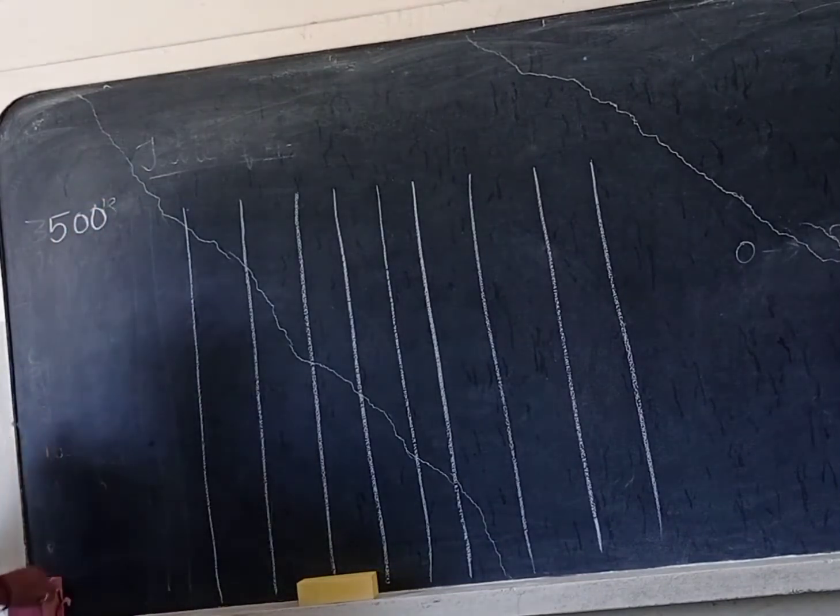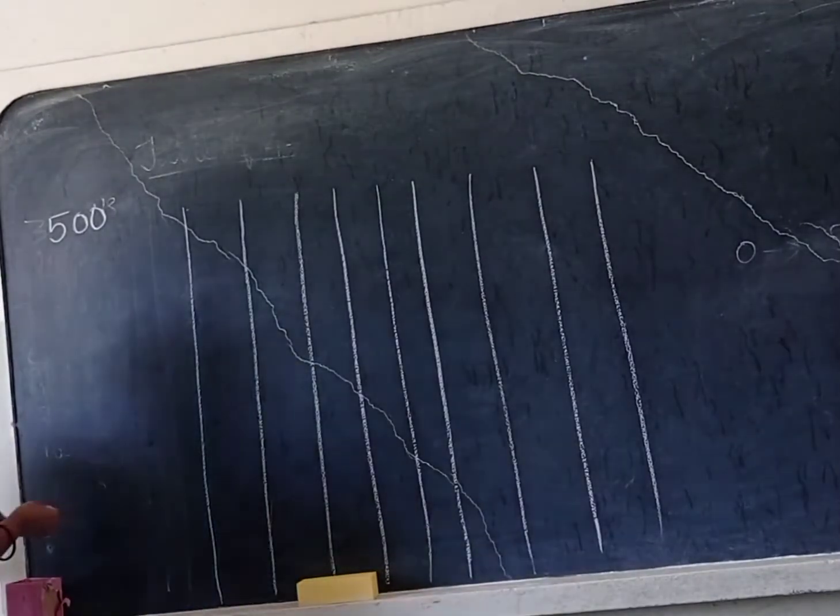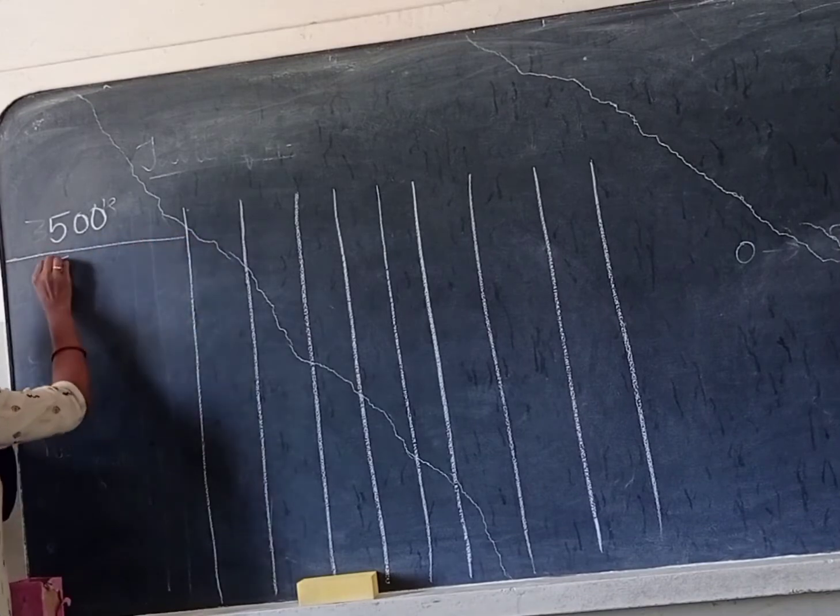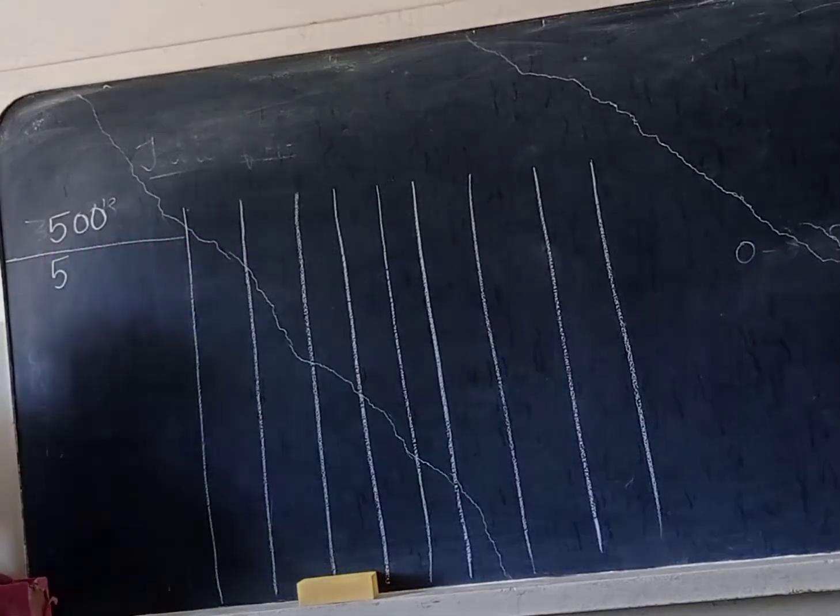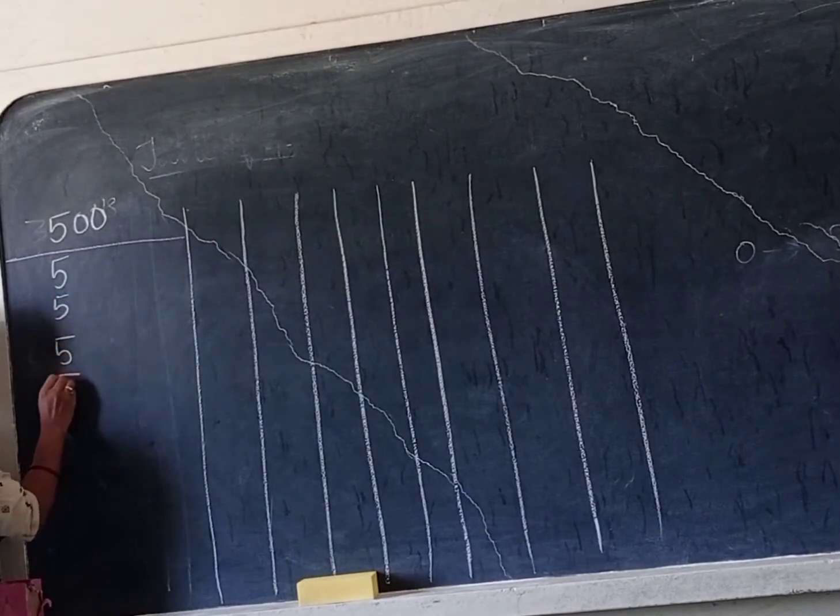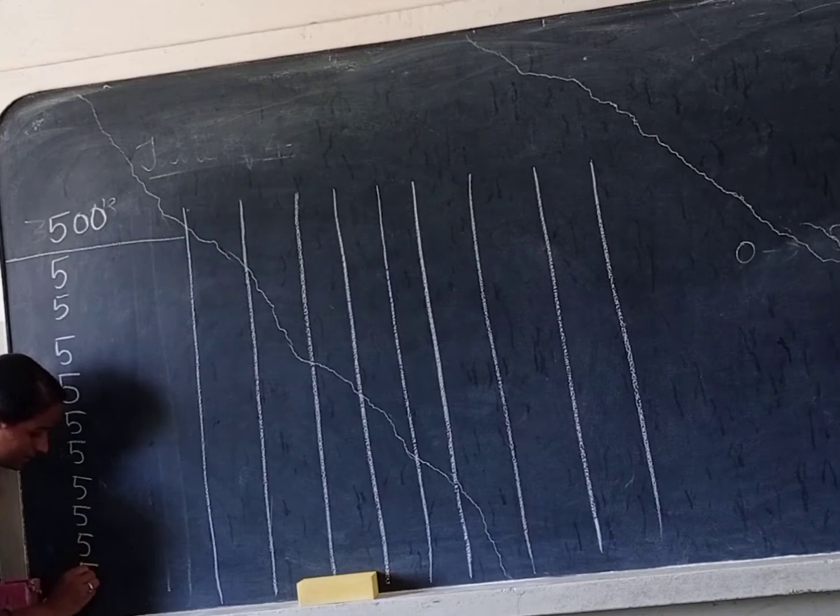Now, let me show you after 500. How to write? First, I write ten times: 1, 2, 3, 4, 5, 6, 7, 8, 9, 10.